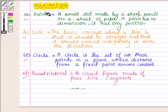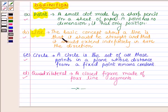So the definition of a point is a small dot made by a sharp pencil on a sheet of paper. A point has no dimension, it has only position. Second is a line, and the basic concept about a line is that it should be straight and that it should extend indefinitely in both directions.